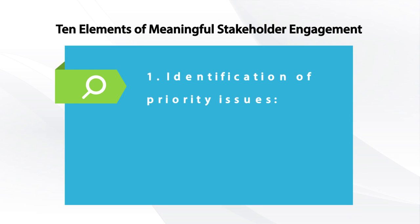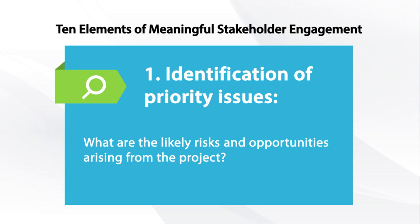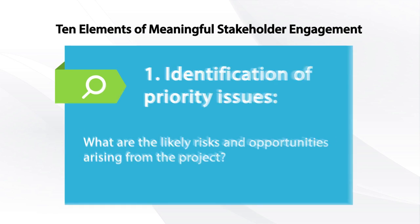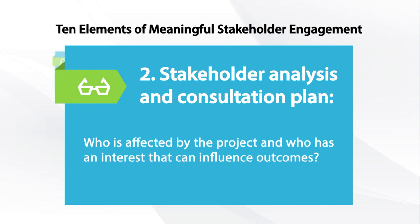First of all, element 1 is identification of priority issues — what are the likely risks and opportunities arising from the project? Element 2 is stakeholder analysis and consultation plan: who is affected by the project and who may have an interest that can influence project outcomes, and how will the project engage with them?